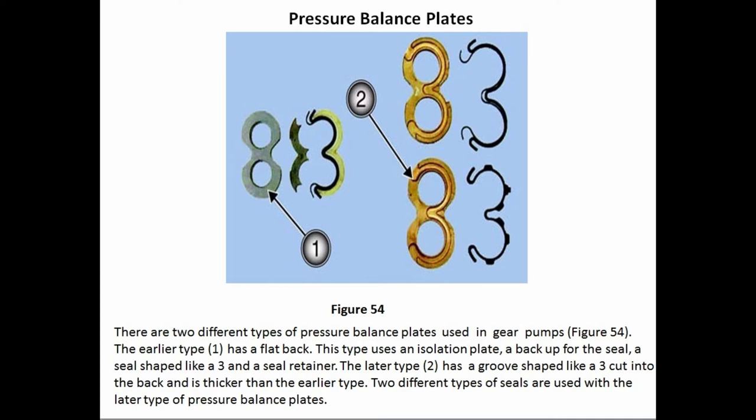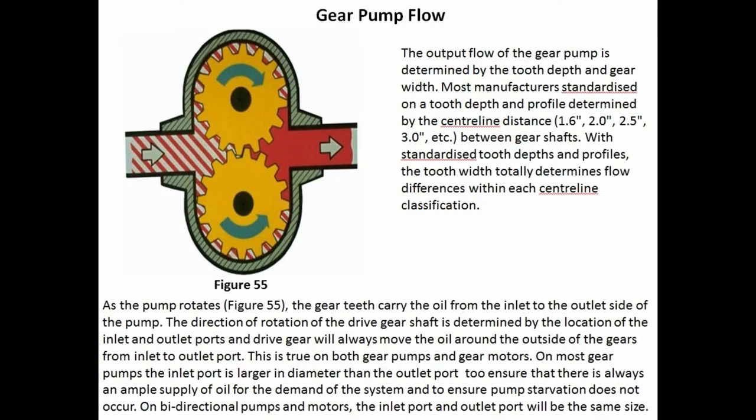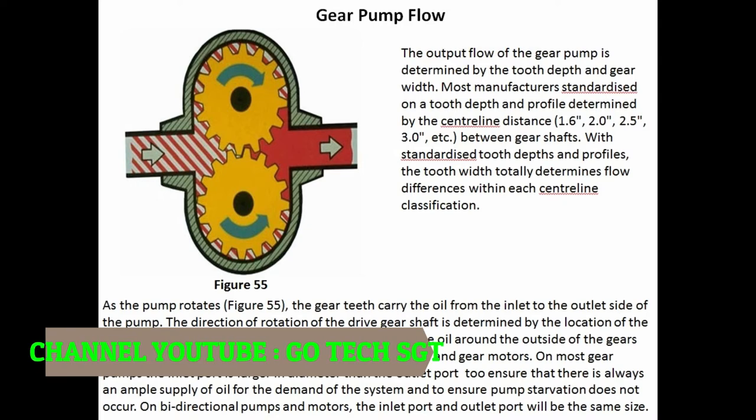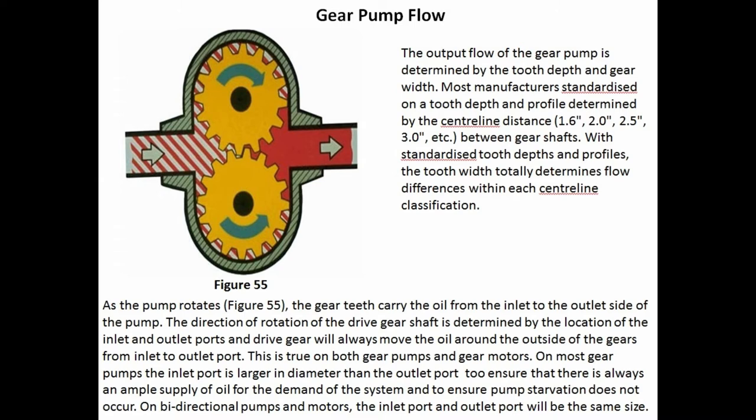Two different types of seals are used with the later type of pressure balance plates. The output flow of the gear pump is determined by the tooth depth and gear width. Most manufacturers standardize on a tooth depth and profile determined by the centerline distance (1.6, 2.0, 2.5, 3.0, etc.) between gear shafts. With standardized tooth depth and profiles, the tooth width totally determines flow differences within each centerline classification. As the pump rotates (Figure 55), the gear teeth carry oil from the inlet to the outlet side. The direction of rotation of the drive gear shaft is determined by the location of the inlet and outlet ports.